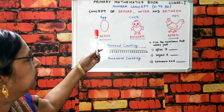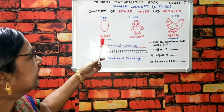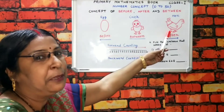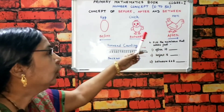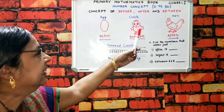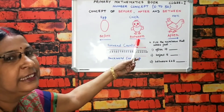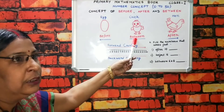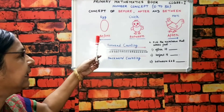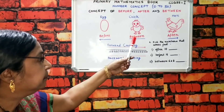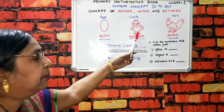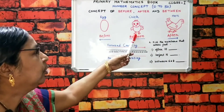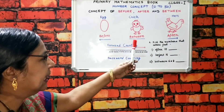Hum log yeh picture bhi dekh rahe hain. Yeh picture hai — egg. Yeh picture hai — chick. Yeh picture hai — hen. Chick ke before kya aata hai? Chick duniya mein aane ke pehle kaisa rehta hai? Voh ek egg rehta hai. Aur chick baad mein kya ban jaata hai? Chick baad mein hen ban jaata hai.